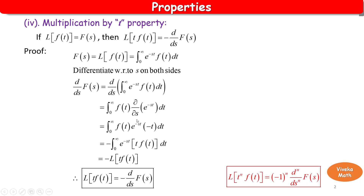Differentiating e to the power minus st partially with respect to s gives e to the power minus st into minus t. So we get minus t carrying through, giving us: d by ds of F(s) equals minus integral from 0 to infinity of e to the power minus st times t times f(t) dt.